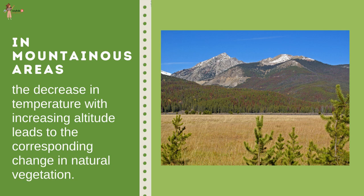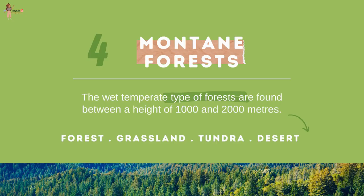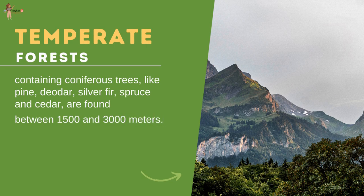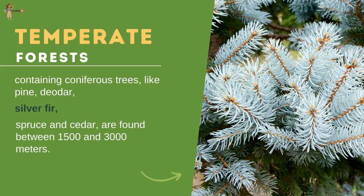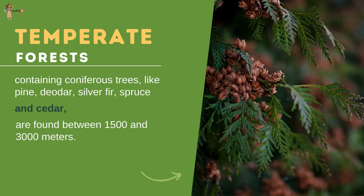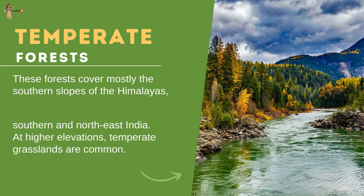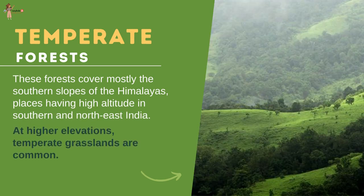In mountainous areas, the decrease in temperature with increasing altitude leads to a corresponding change in natural vegetation, following the same succession as from the tropical to the tundra region. Wet temperate forests are found between 1,000 and 2,000 meters, where evergreen broadleaf trees such as oaks and chestnuts predominate. Between 1,500 and 3,000 meters, temperate forests containing coniferous trees like pine, deodar, silver fir, spruce and cedar are found, covering mostly the southern slopes of the Himalayas and high-altitude places in southern and northeast India. At higher elevations, temperate grasslands are common.